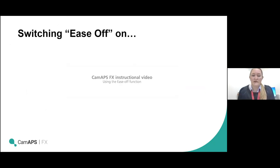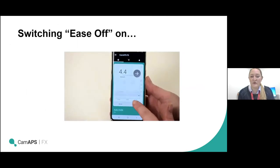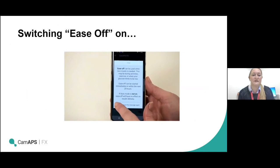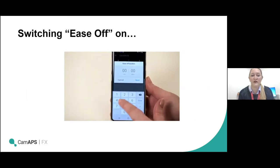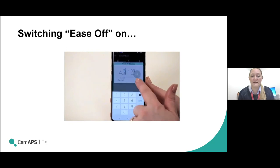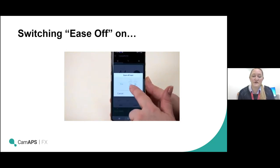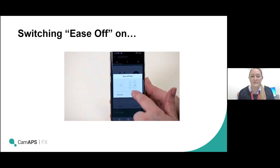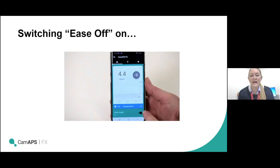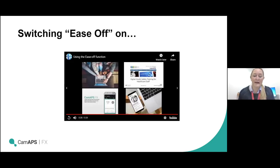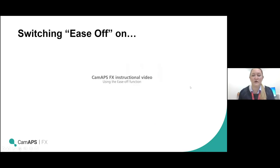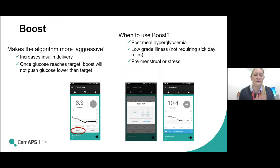In the ease off video, you can see that by touching the ease off button it tells you what ease off does and when it might be useful, then asks how long you want it to run. Entering two hours and pressing next, it asks whether you want it now or later. If you choose later, it lets you preset the time you want it to come on. You can see 'planned ease off' with a little clock icon indicating it's set to come on automatically at the programmed time, relative to the exercise period.